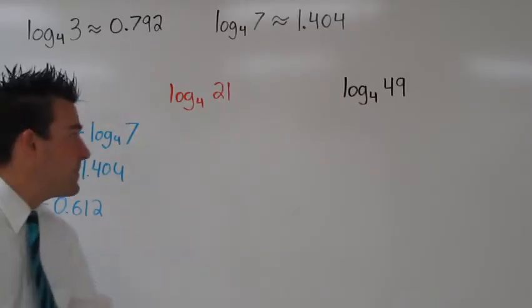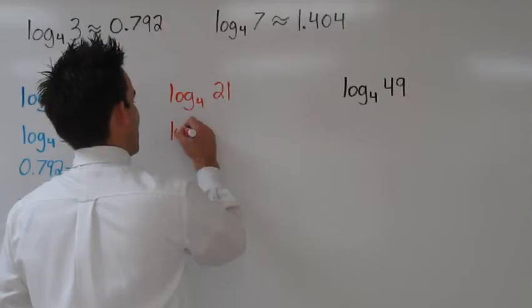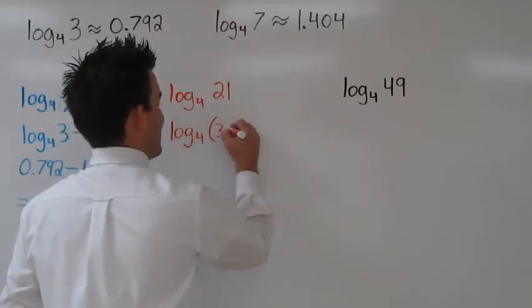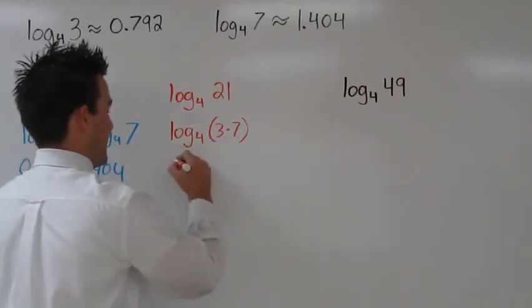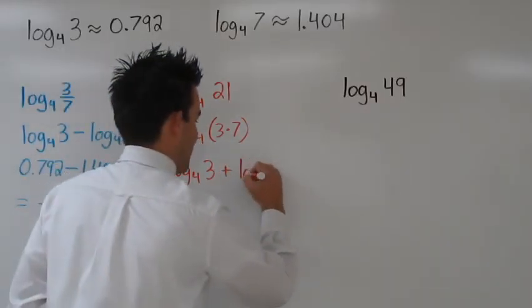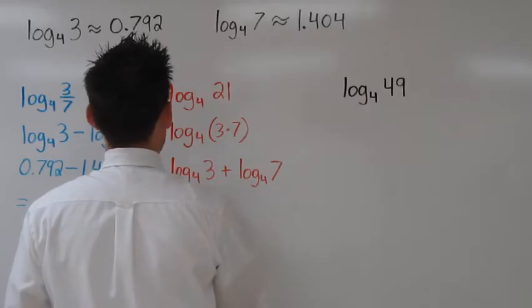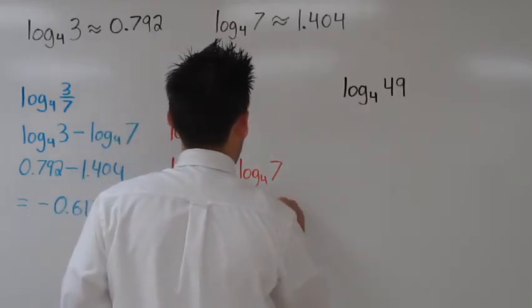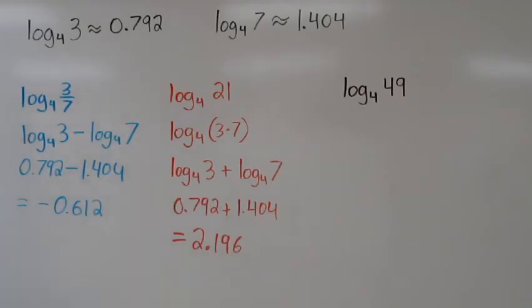Let's try this second one. Here we're trying to find log base 4 of 21. Well, 3 times 7 is 21. So if we rewrite this as log base 4 of 3 times 7, we can use the product property. Log base 4 of 3 times 7 is really just log base 4 of 3 plus log base 4 of 7. We have these two values above, so now all we have to do is add. 0.792 plus 1.404 equals 2.196.